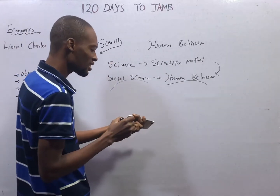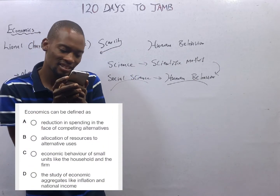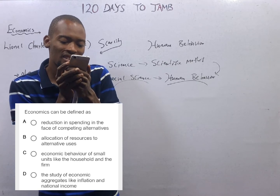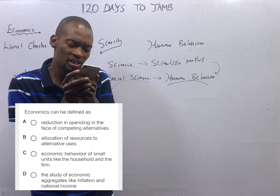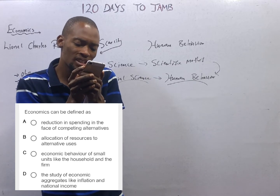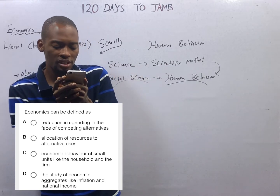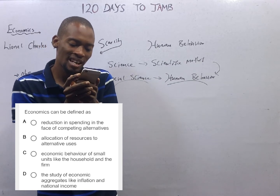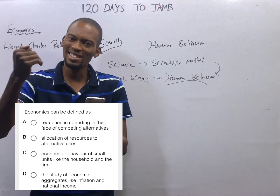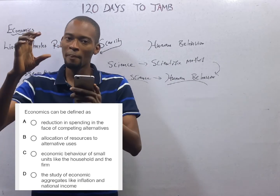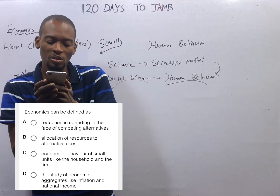It is a science subject because it adopts the scientific method. It is a social science subject because it studies human behavior — that's why it can also be regarded as a science subject. Next question: economics can be defined as — A: reduction in spending for competing alternatives. B: allocation of resources to alternative uses. C: economic behavior of small units like the household and the firm — that's microeconomics. D: the study of economic aggregates like inflation and national income — that's macroeconomics. So option B is appropriate: allocation of resources to alternative uses.